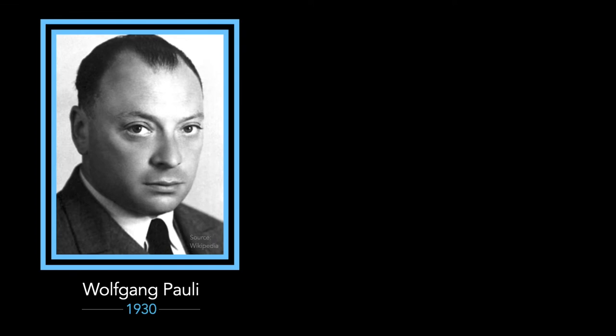In 1930, Wolfgang Pauli suggested a unique solution to this puzzle. If another invisible particle was emitted with the electron, it could take away part of the energy and thus conservation of energy prevails. Pauli's suggestion was famously stipulated in a letter that begins, Dear Radioactive Ladies and Gentlemen.